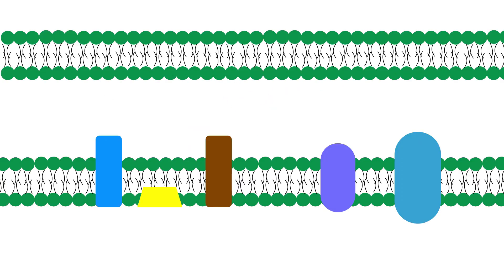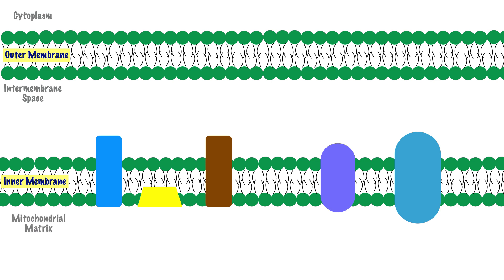As we zoom in to our mitochondria, we begin with our cytoplasm, the jelly-like substance filling the space between the cell membrane and the nucleus. Within the cytoplasm, we have our fluid portion, mostly made of water, containing ions, small molecules, and large molecules such as proteins and enzymes. Moving to the mitochondria, we have its outer membrane, a phospholipid bilayer, followed by the intermembrane space — the space between the outer and inner membranes. Next is the inner membrane with its folds or cristae, which contains enzymes often referred to as complexes. Finally, the innermost portion is the mitochondrial matrix.